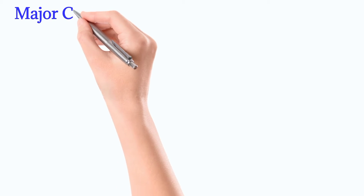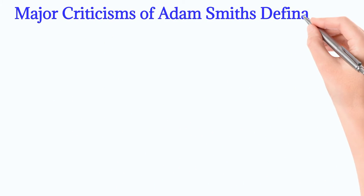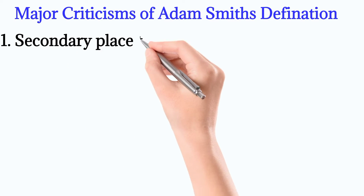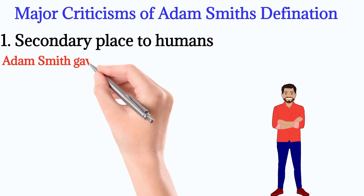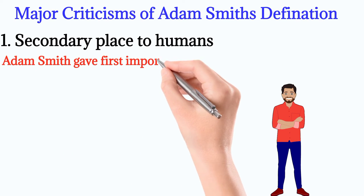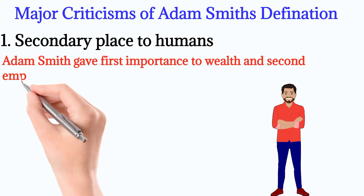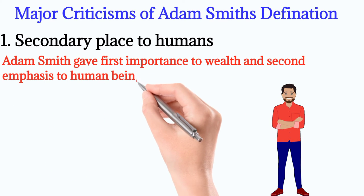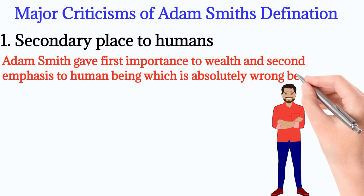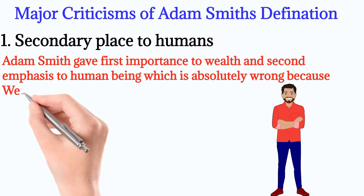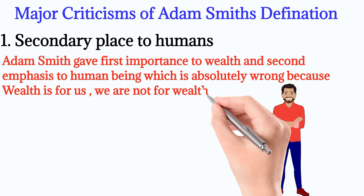Now after the features, let us see some of the major criticisms of his definition. Number 1: Secondary place to humans. Adam Smith gave first importance to wealth and second emphasis to human beings, which is absolutely wrong — because wealth is for us, we are not for wealth.